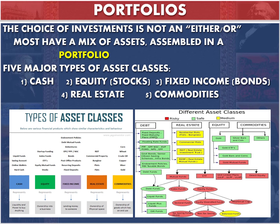The second asset class, discussed in the last lecture, is equity or stocks. The third is fixed income or bonds. Two more: real estate, meaning purchases of land, and lastly commodities — things such as gold, oil, and other materials used in production or that are intrinsically valuable. You can look at the different types of things that fall under these large headings.